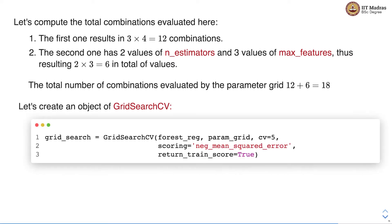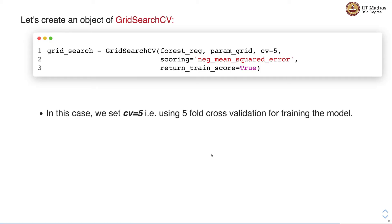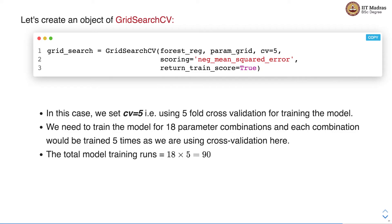Let us create a GridSearchCV object with the parameter grid. In GridSearchCV we specify the estimator, which is forest_reg — the random forest regressor object — the parameter grid, number of cross-validation folds, the scoring scheme, and a flag that specifies whether we want to also return the training scores. We need to train this model for 18 parameter combinations and each combination would be trained 5 times because the number of cross-validations is set to 5. So in all we will be performing 90 model training runs.